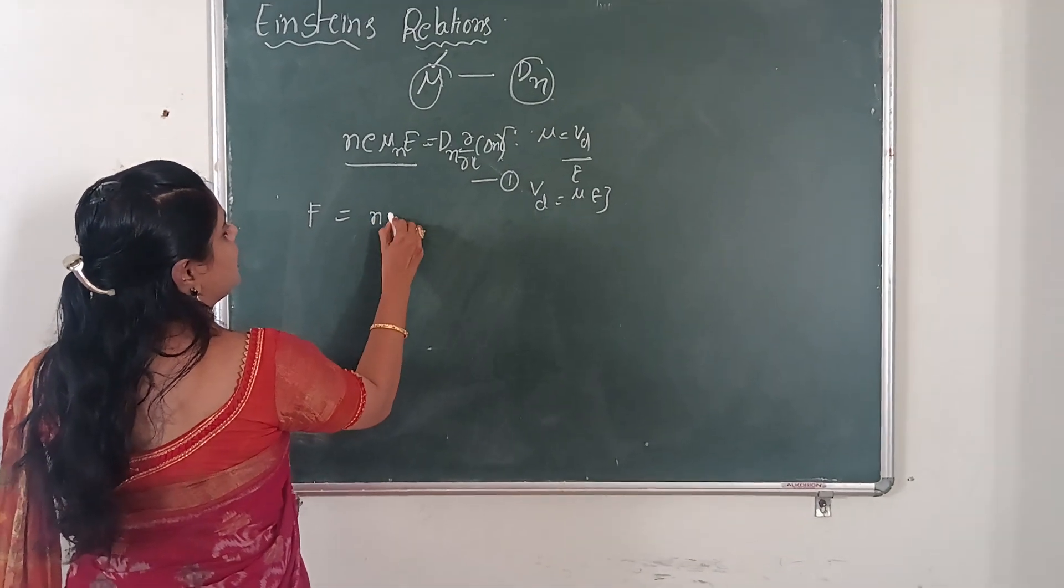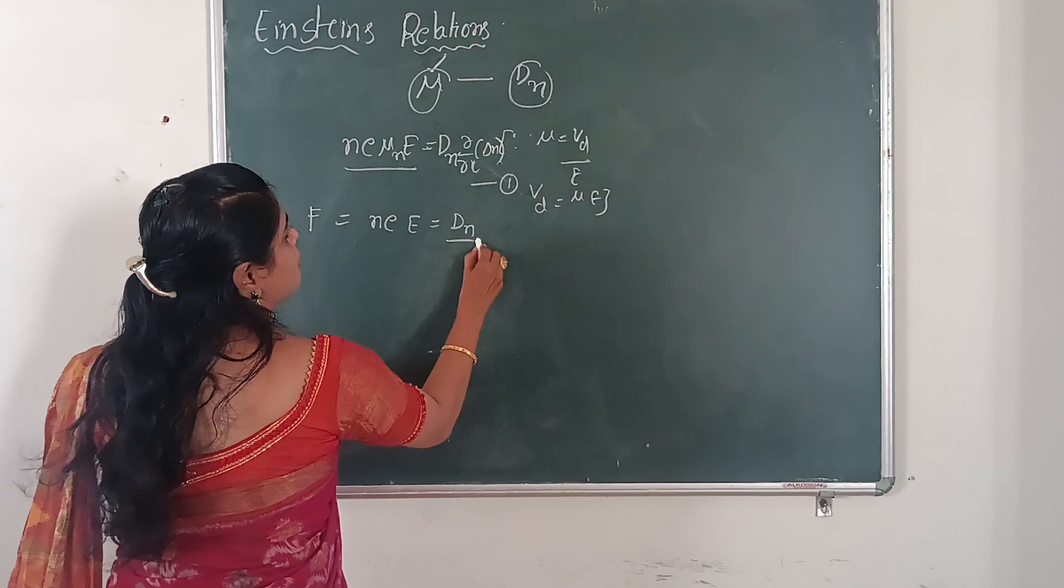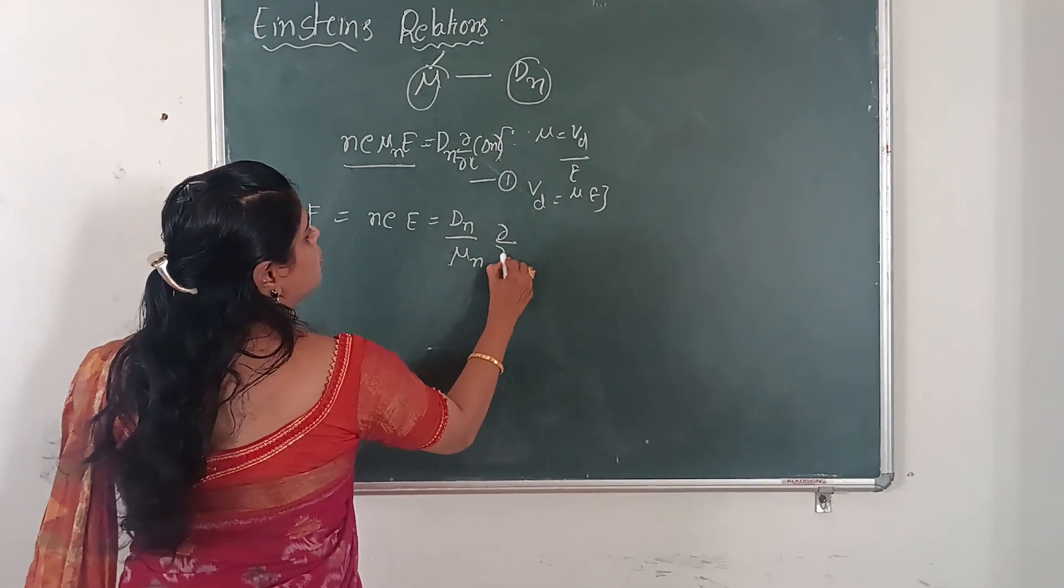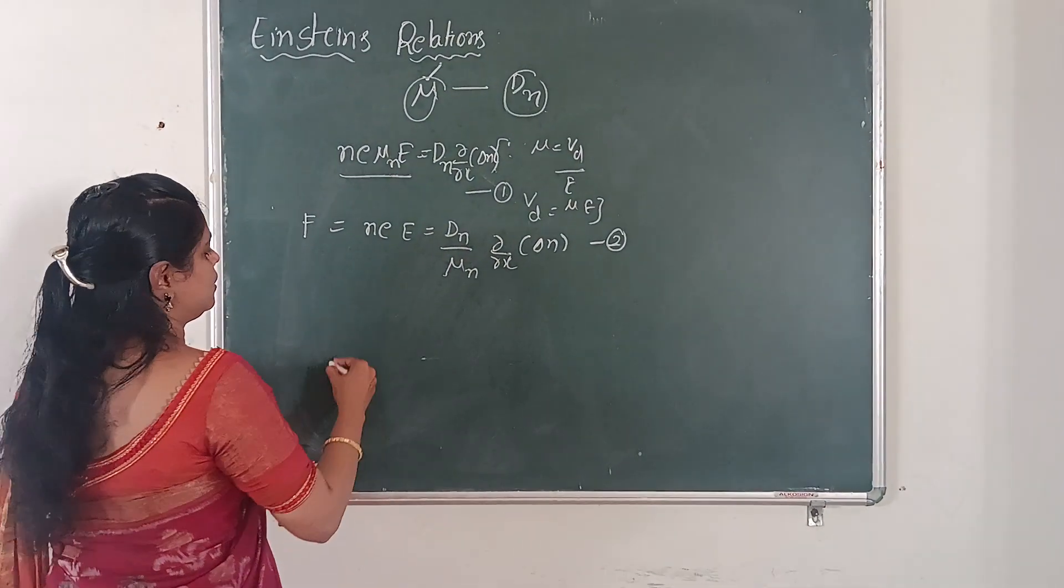F equals to Ne capital E. So that's equal to dn by mu n into d by dx of delta n.